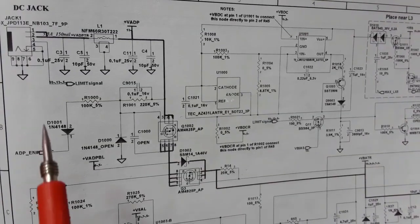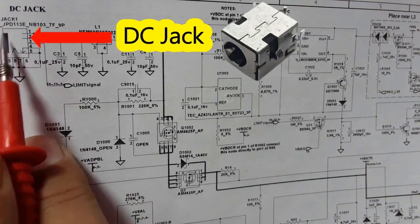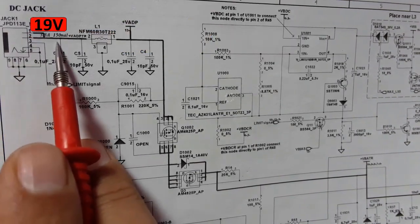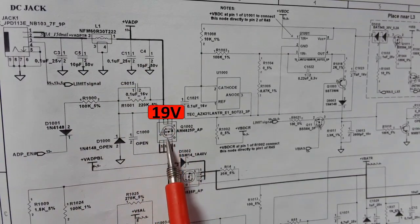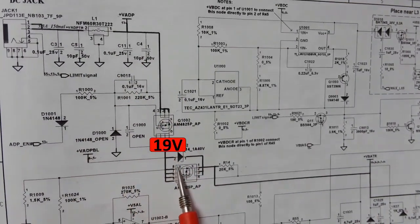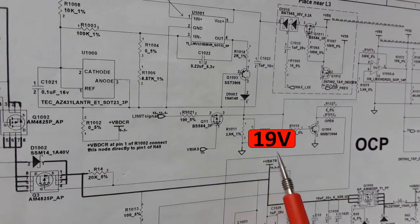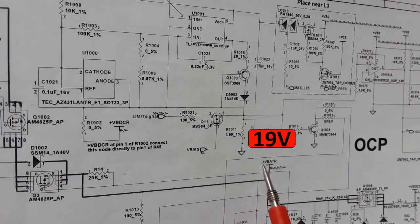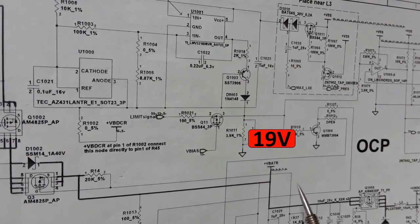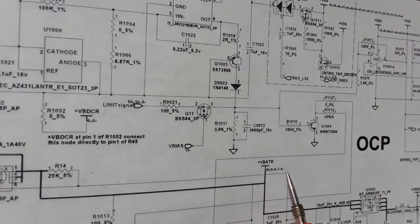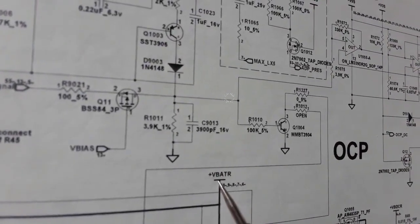This is the circuit diagram. Here we have the DC jack. The 19 volts goes directly past the ceramic capacitors, then goes to Q10-02, and then continues until we get to plus V-BAT. This plus V-BAT will be distributed to the whole motherboard, to all circuits. Basically this plus V-BAT is missing and we need to find the failed component.